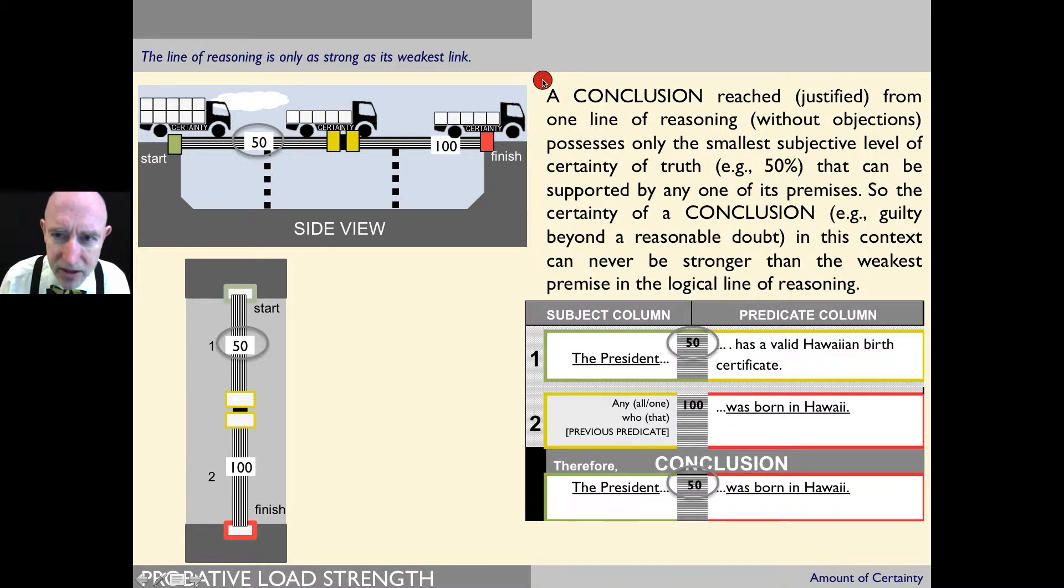Another way of saying it is: a conclusion reached or justified from one line of reasoning—and this is without objections—possesses only the smallest subjective level of certainty of truth, for example 50%, that can be supported by any one of its premises. So the certainty of a conclusion, such as guilty beyond a reasonable doubt in a criminal matter, in this context can never be stronger than the weakest premise in the logical line of reasoning.